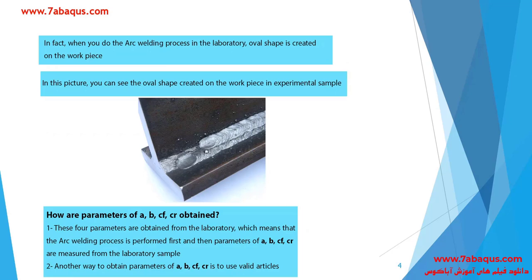In this picture you can observe the oval shape created on the workpiece in the experimental sample. There are two methods for obtaining these four parameters. In the first method, you can obtain them in the laboratory — meaning you first implement the arc welding process in the laboratory and then measure the parameters a, b, cf, and cr from the laboratory sample.